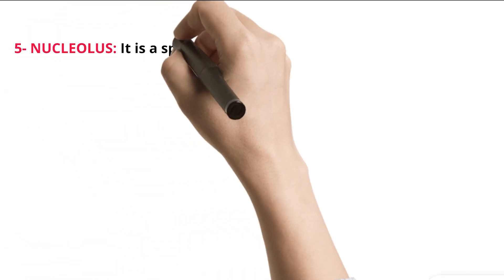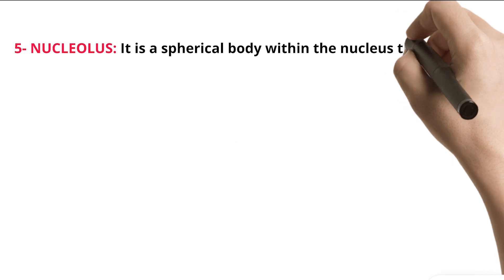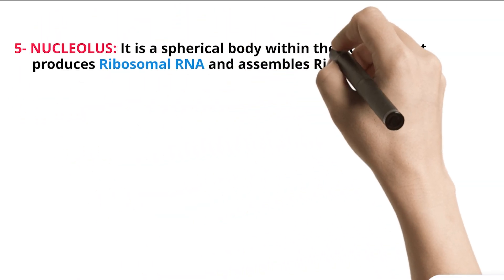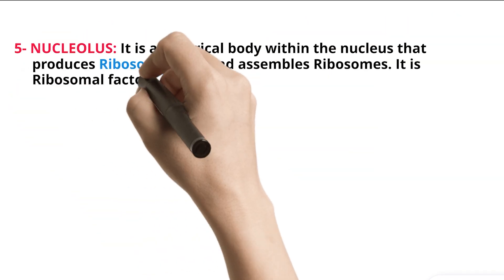5. Nucleolus. It is a spherical body within the nucleus that produces ribosomal RNA and assembles ribosomes. It is ribosomal factory.